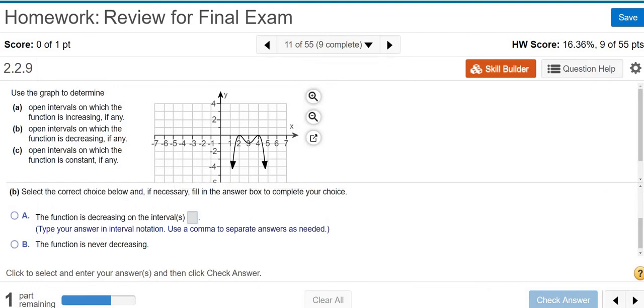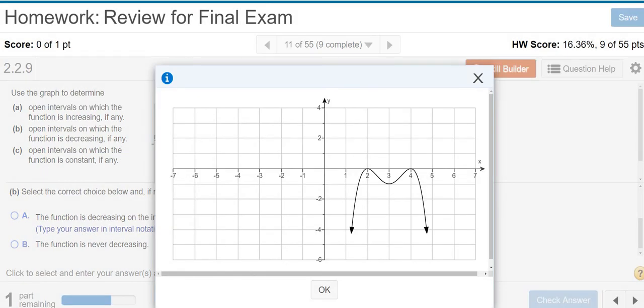Now we want to know where it's decreasing. So let me make it big so you can see it. So right here, you see it's getting smaller from 2 to 3. It's always x values. So from 2 to 3, the y values are getting smaller. From 4 to infinity, the y values are getting smaller. So 2 to 3 and 4 to infinity.